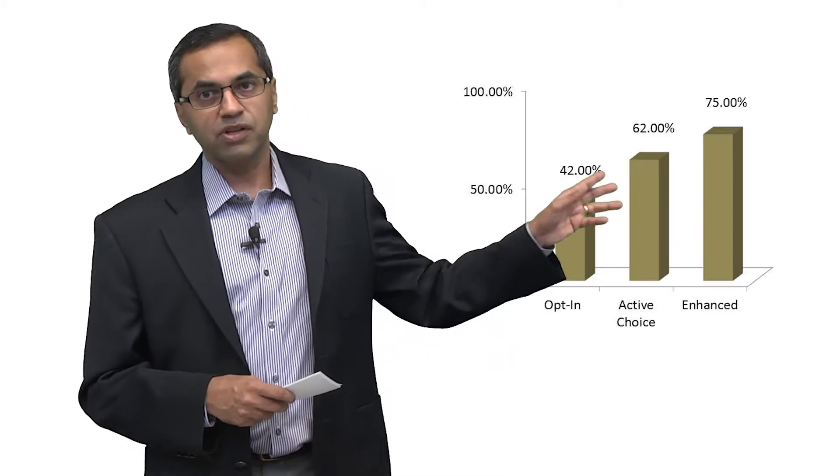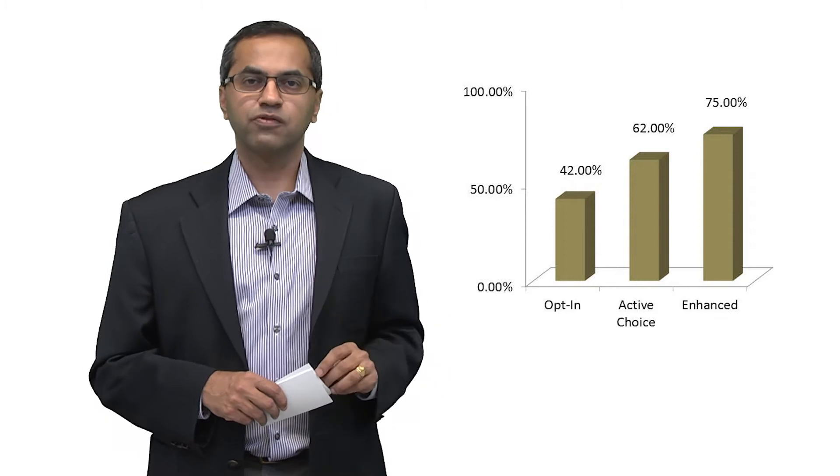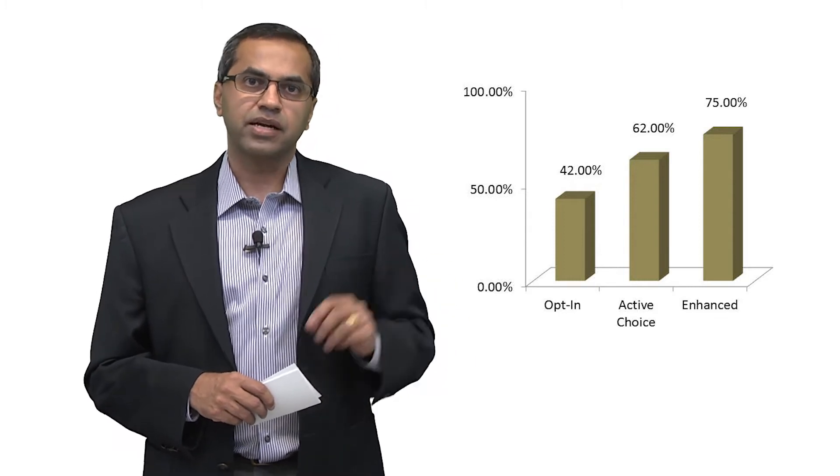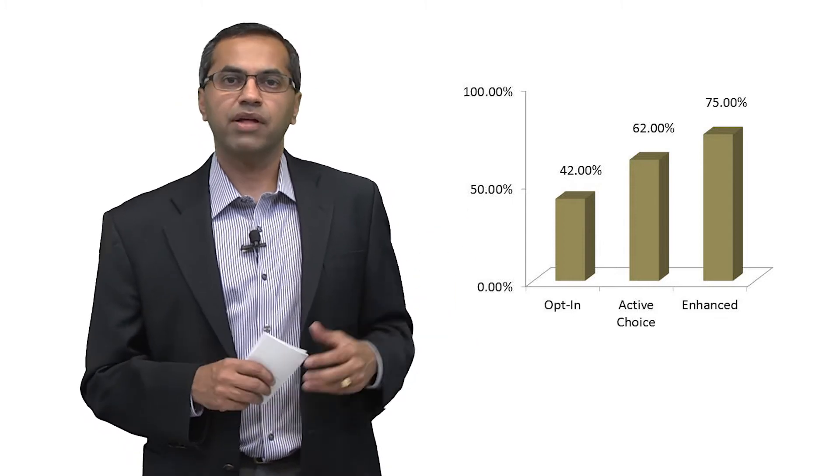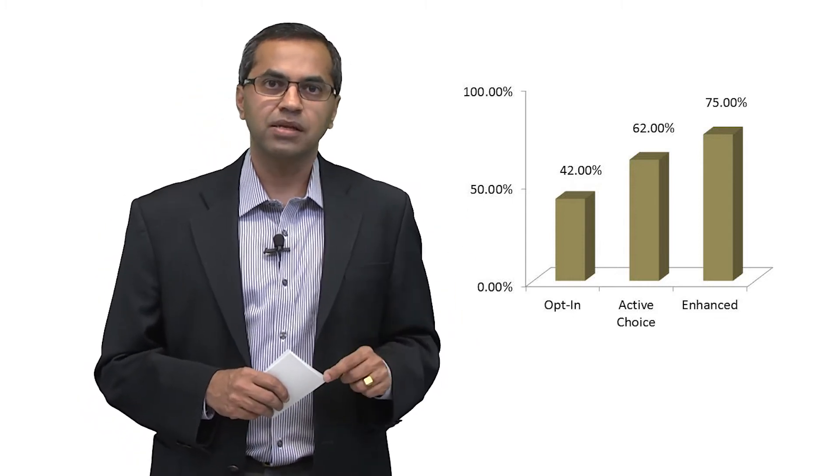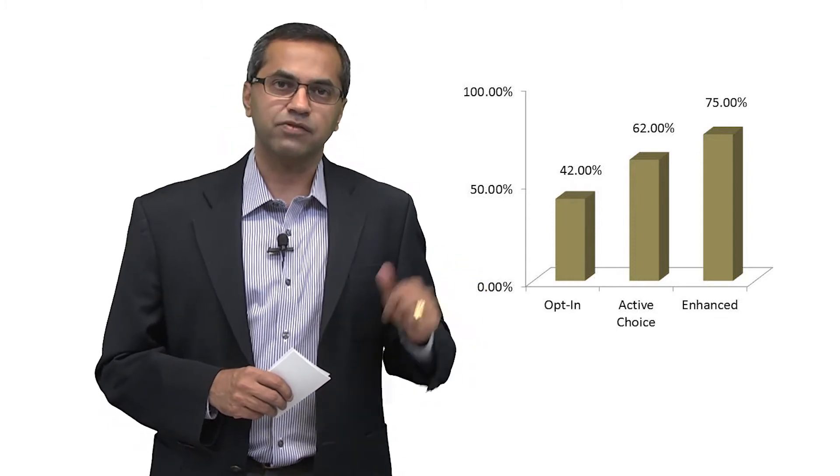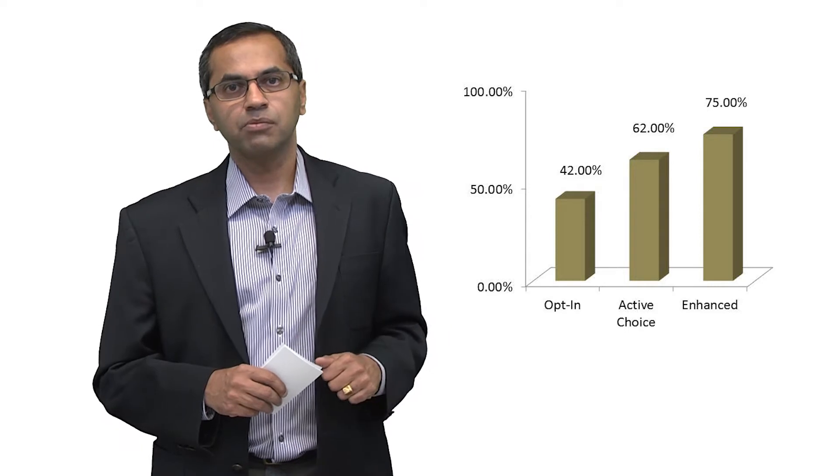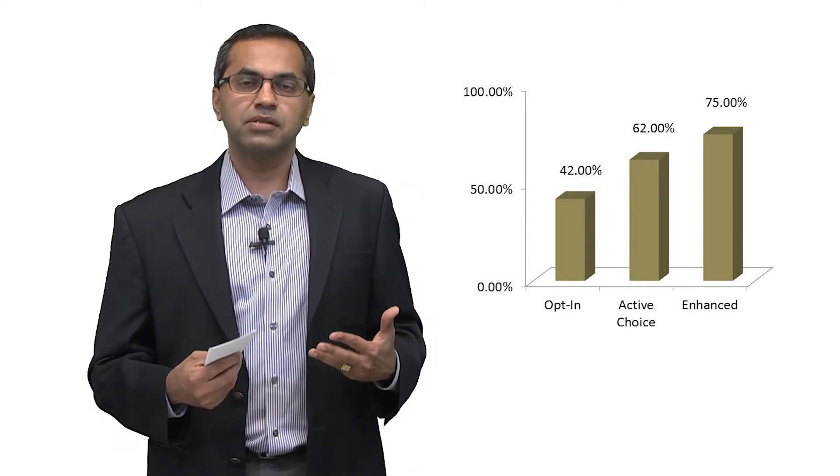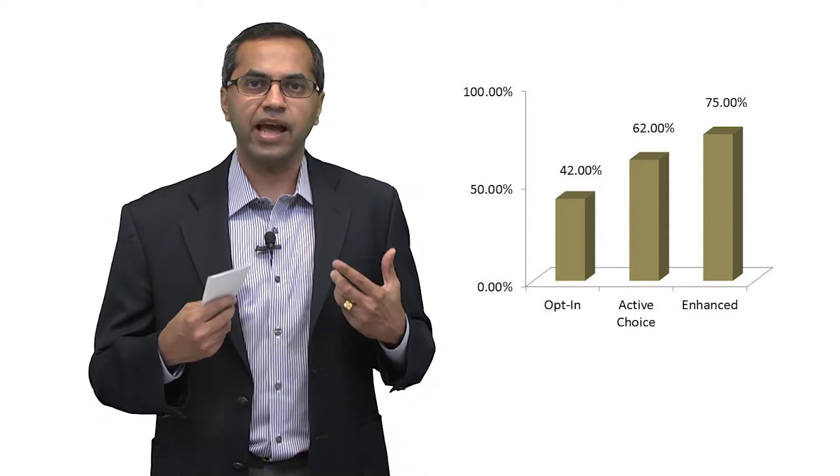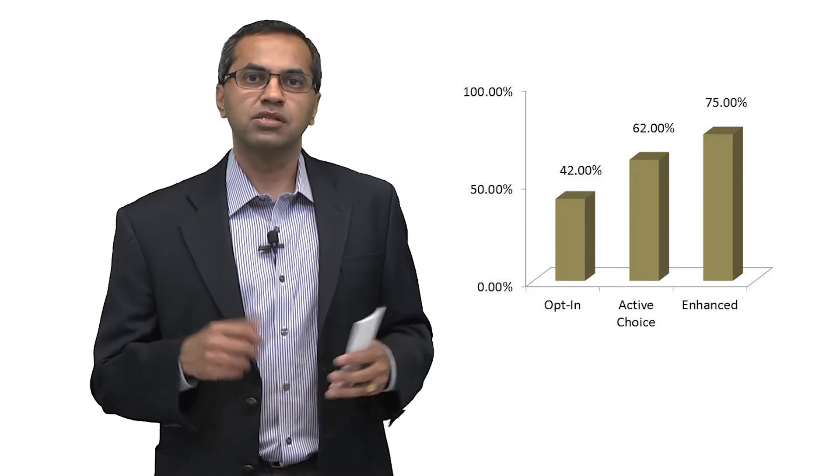What did they find? Here's what they found. For people that saw the standard opt-in condition, 42% of those folks did express a desire to get a flu shot. When it was converted into a yes-no active choice, that number went up to 62%. But the kicker is when they had an enhanced active choice, the number went up to 75%. So the idea in this paper is simple: making the choice salient, making it active, and highlighting the cost of the bad choice changes the outcome.